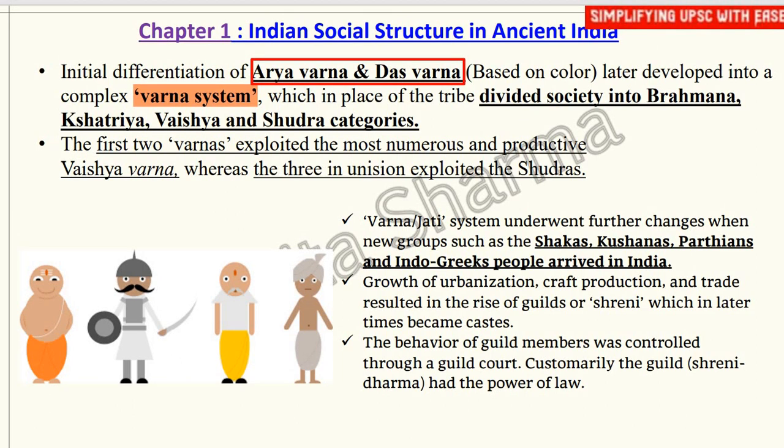When we talk about the social structure of ancient India, we are not studying medieval or modern Indian history — we are starting with ancient Indian history. When we talk about the social structure, we talk about the Vedic civilization and the later Vedic civilization. The social structure properly started from the later Vedic civilization, and there was initial differentiation of 'ra varna' and 'das varna' based on color.